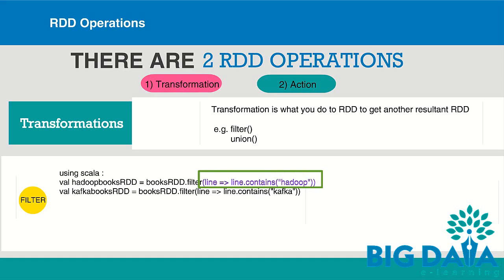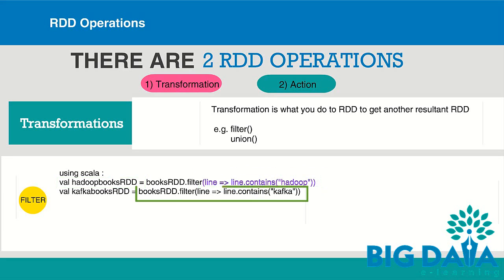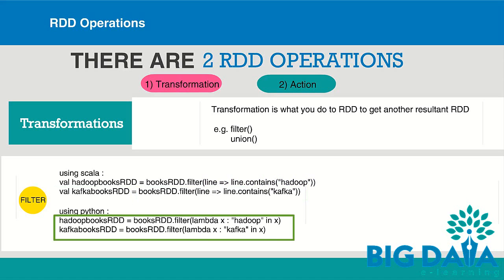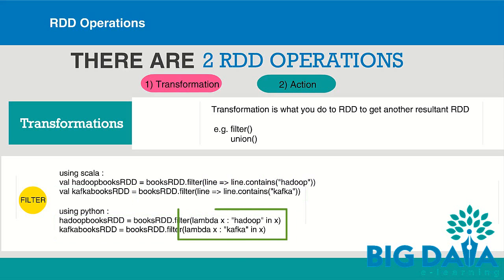This is how the filter transformation is applied on books RDD and is assigned to Hadoop books RDD. In the same way, all those books that have the Kafka keyword are filtered and put into Kafka books RDD. The highlighted lines explain how these filter operations can be done using Python — the only difference is the usage of a lambda expression instead of a function literal.